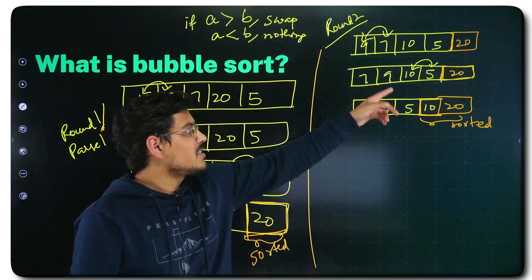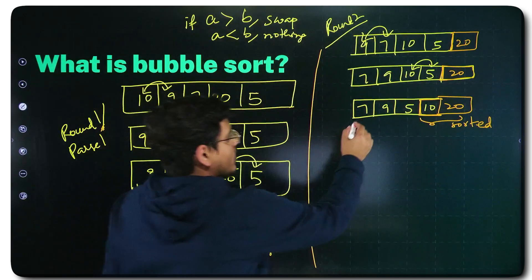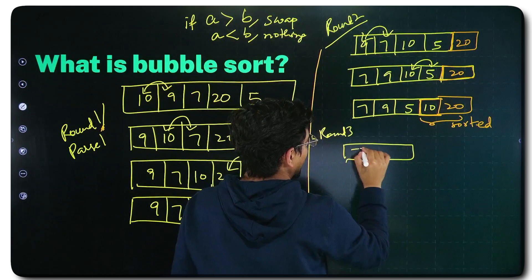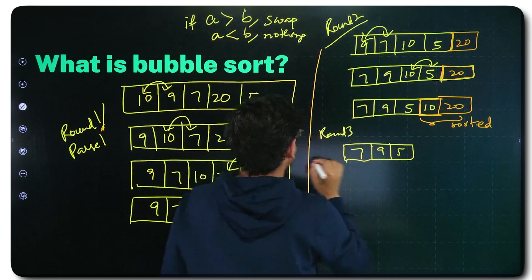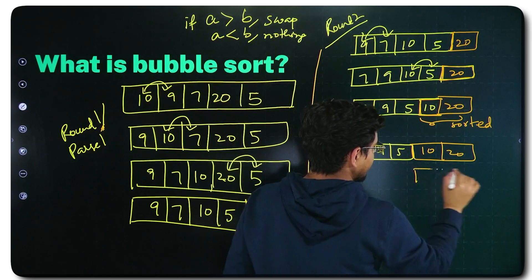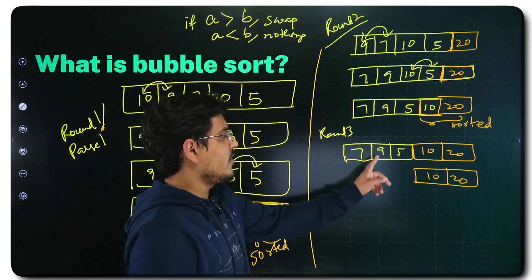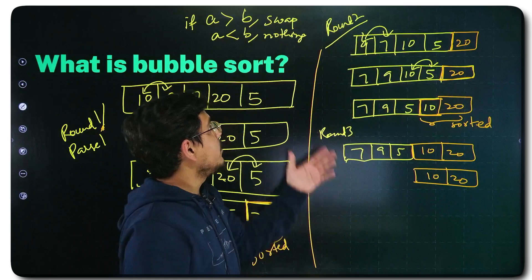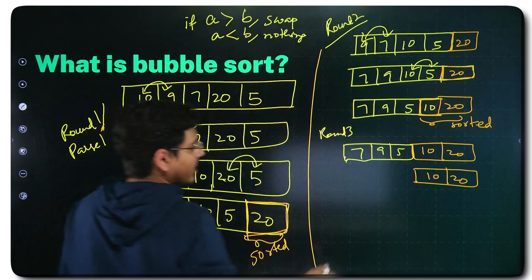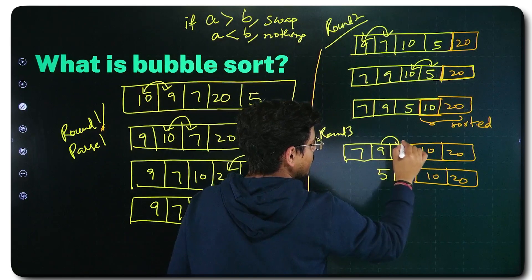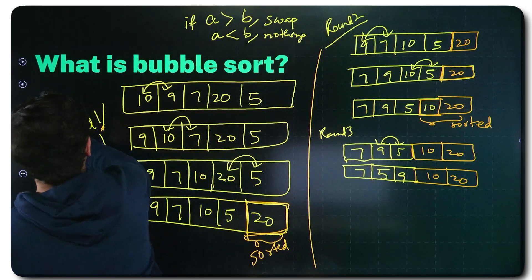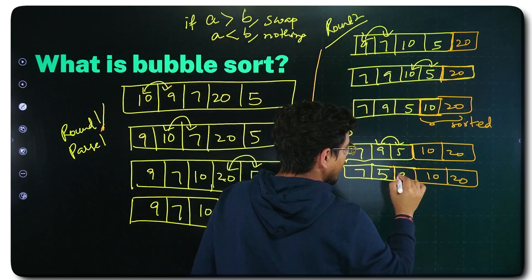The second largest element is at its correct place. Now this much is unsorted, so I go ahead with round 3. In round 3 I check the remaining 3 elements — the rest 2 are already sorted. I check 7 and 9 — that's fine, no change needed since 7 is smaller than 9. Then 9 and 5 — 9 is greater than 5, swap them.